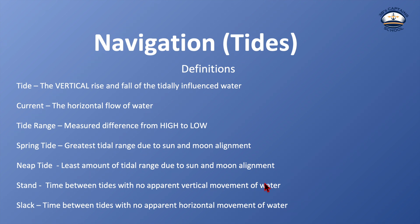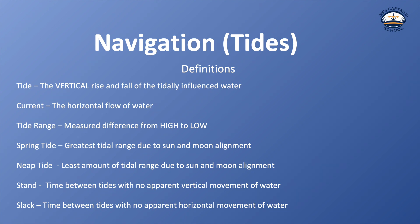Neap tide is when the sun and moon are aligned so we have the least amount of tidal range — you'll have higher lows and lower highs, the least amount of range. Stand is a term used to reference the time between tides where there's no apparent vertical movement of water, so the water doesn't appear to be moving up or down, not getting higher or lower.